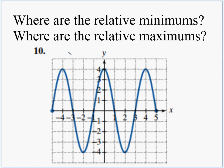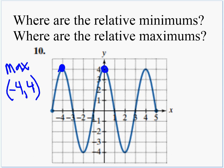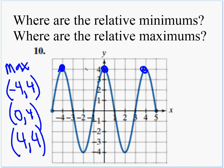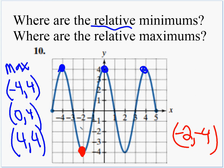Finding mins and maxes on the given graph: peaks occur at negative 4, 4; at 0, 4; and at 4, 4 — all are relative maxima since they're each peaks of a local hill. The valleys are at negative 2, negative 4 and at 2, negative 4 — both are relative minima. Even if there are bigger hills around, a local peak is always a relative max and a local valley is always a relative min.